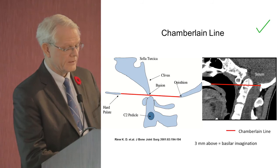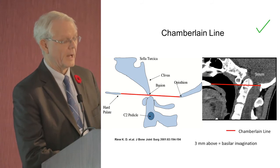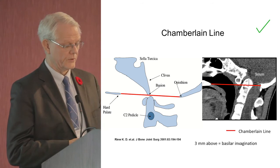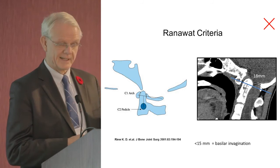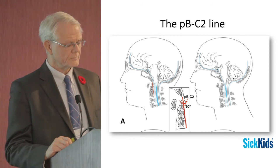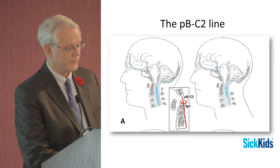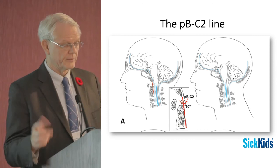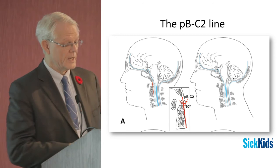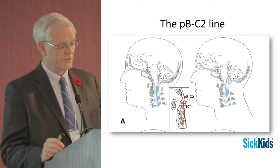Other lines measure slightly different parameters. One measurement assesses what's called the retropulsion of the odontoid process — if it curves backwards and impinges on the brainstem, as sometimes seen in Chiari malformation, that can be a sign something needs to be done. A newer measurement called the PBC2 line has come into play to assess the degree of odontoid retropulsion toward the brainstem, mostly affecting patients with Chiari malformation.